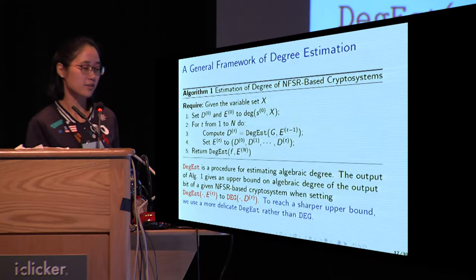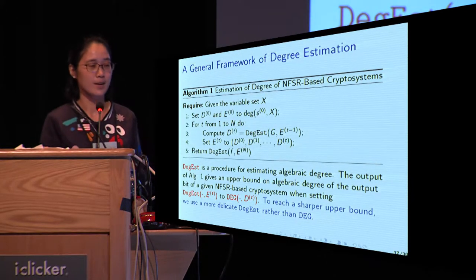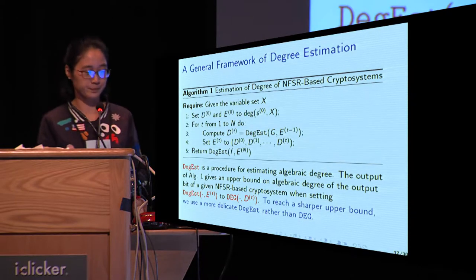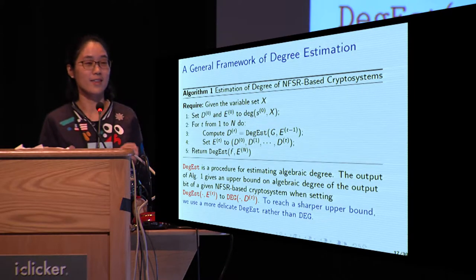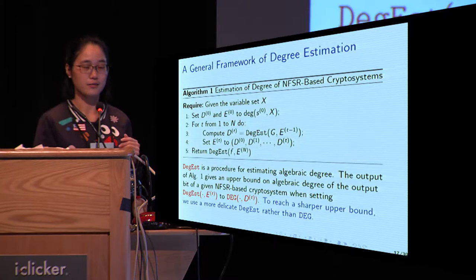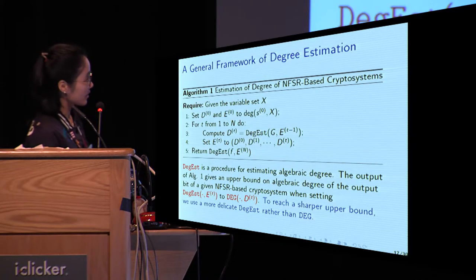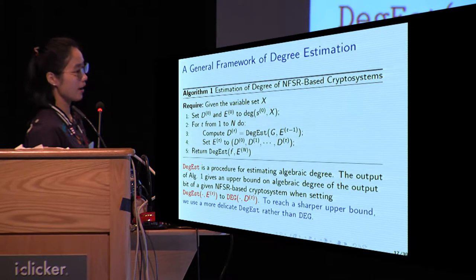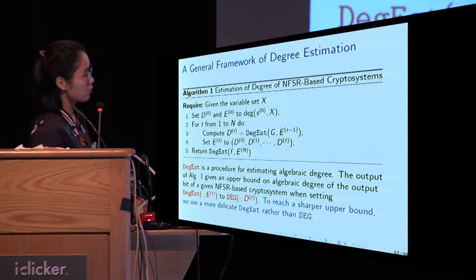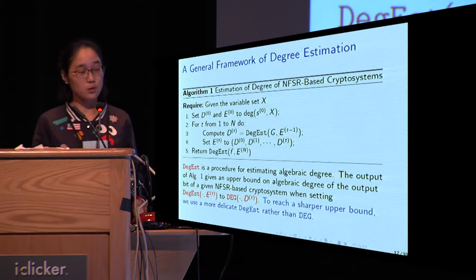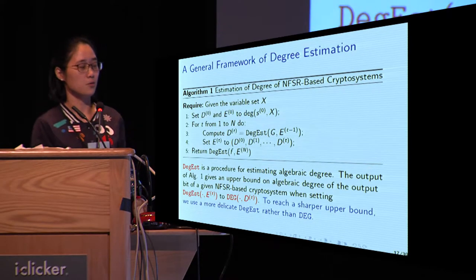The algebraic degrees of the output bits and internal states can be estimated iteratively. This estimation is described in Algorithm 1. In the algorithm, the update function G is written as a vectorial Boolean function that takes into consideration the shift operations. DIG-EST is a procedure for estimating the algebraic degree. When setting DIG-EST to the numeric mapping DIG, this algorithm gives an upper bound on the algebraic degree of the output bit. To reach a tighter upper bound, we use a more dedicated DIG-EST rather than the plain numeric degree mapping.